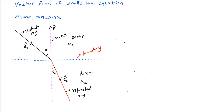This is Snell's law — we know it. Now we are going to bring everything in terms of Ê₁, n̂, and all the unit vectors. We'll be adding the information of Ê₁ and n̂ so that Ê₂ should be expressed in terms of them.